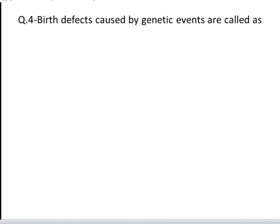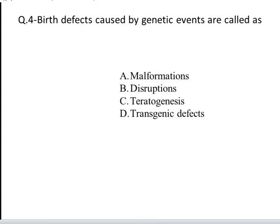The next question is: birth defects caused by genetic events are called. These are the four options: A. Malformation, B. Disruption, C. Teratogenesis, D. Transgenic defects. Yes, the correct answer is A, Malformation.